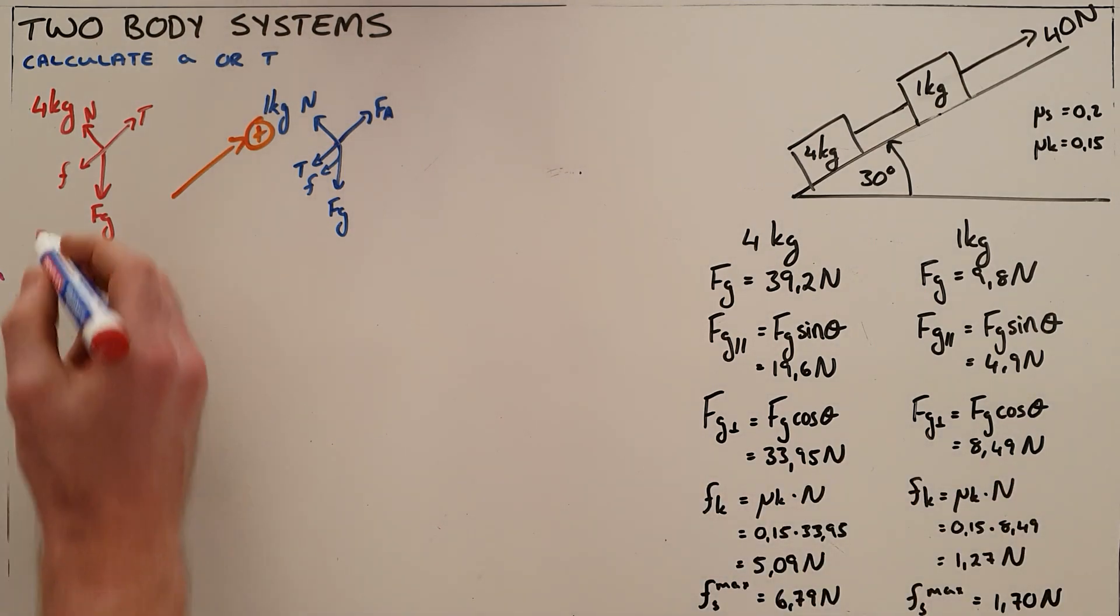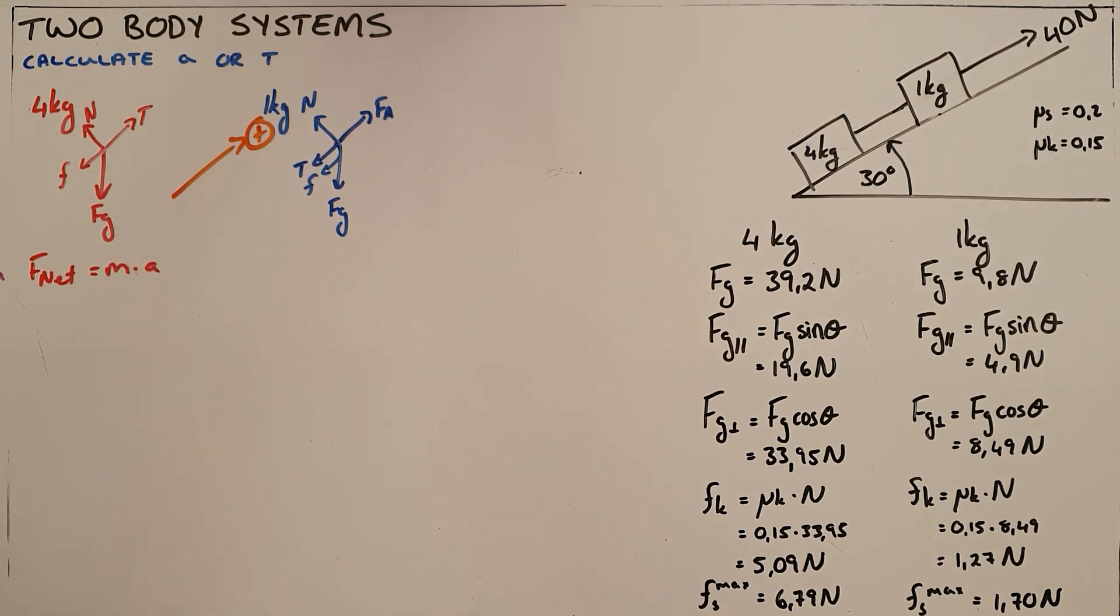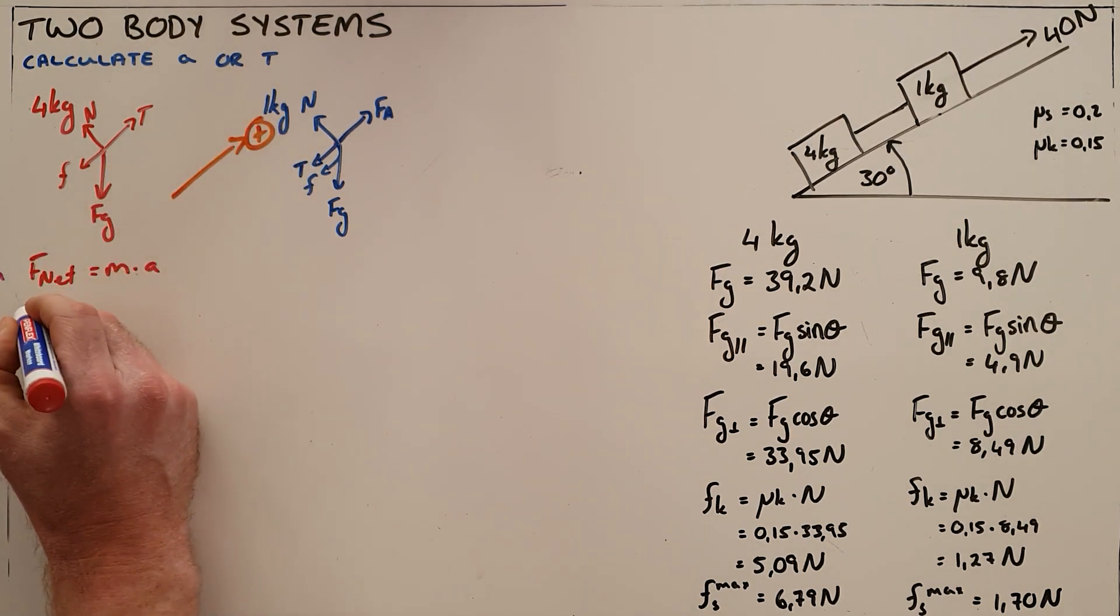For our 4 kilogram object I start with Newton's second law says the net force is equal to the mass times the acceleration of that object. The net force on this object is all the forces pulling it up the slope, in this case that is only tension.